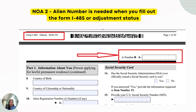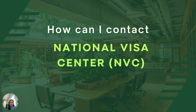If you have the NOA-2, you have to note the alien number because this is needed when you fill out Form I-485, the adjustment of status. In every page of Form I-485, you have to input your alien number. Now that you have the alien number and the NOA-2, let us now check how we can contact the National Visa Center.